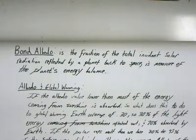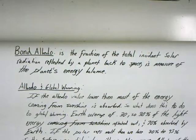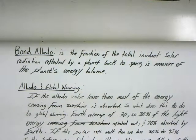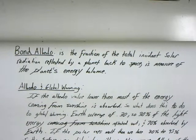Earth's average surface reflects about 30% of light energy, and 70% is being absorbed by the Earth. So if the polar caps melt, when we lose 30% to 95% of the surface area, it will in turn raise the average albedo of the Earth, which would heat up the Earth.